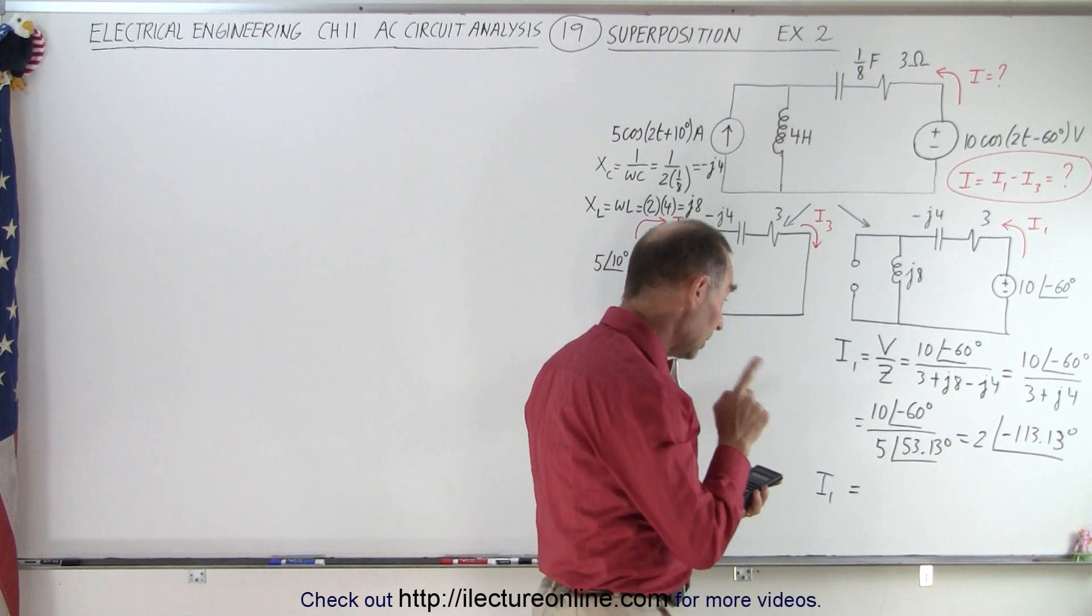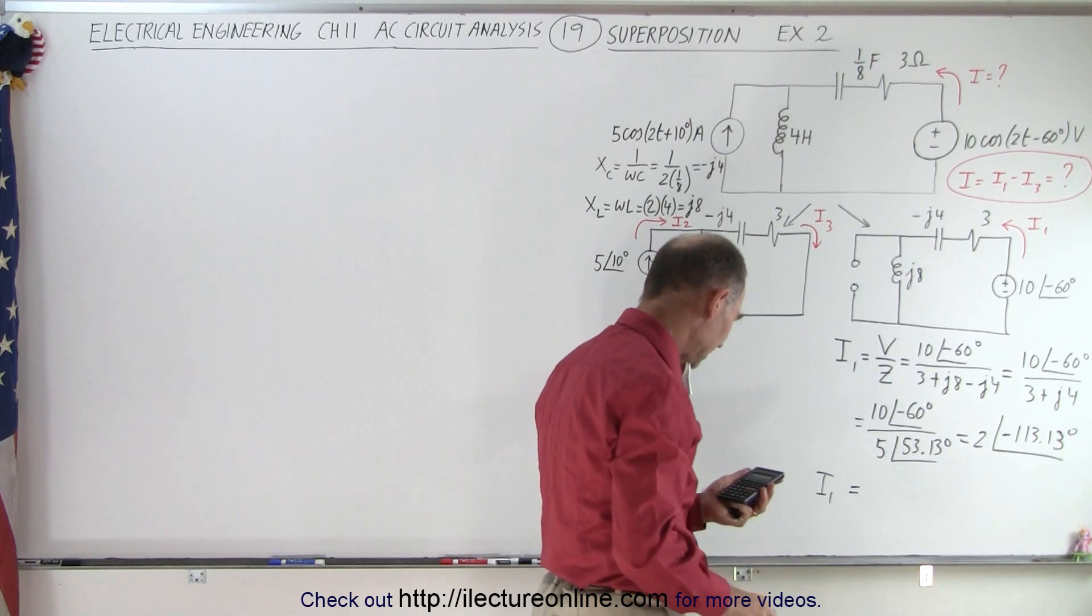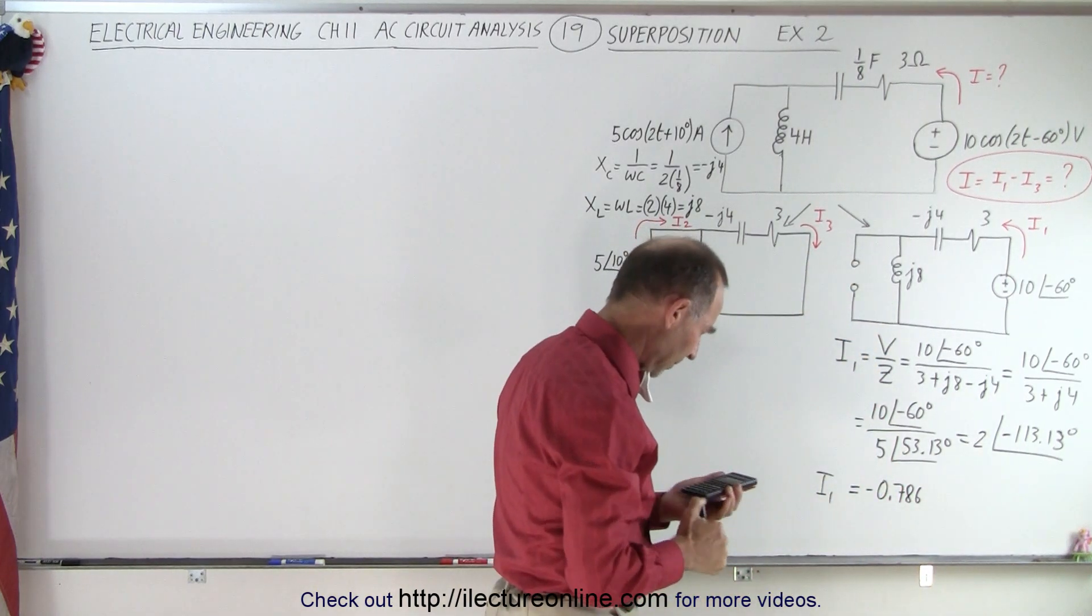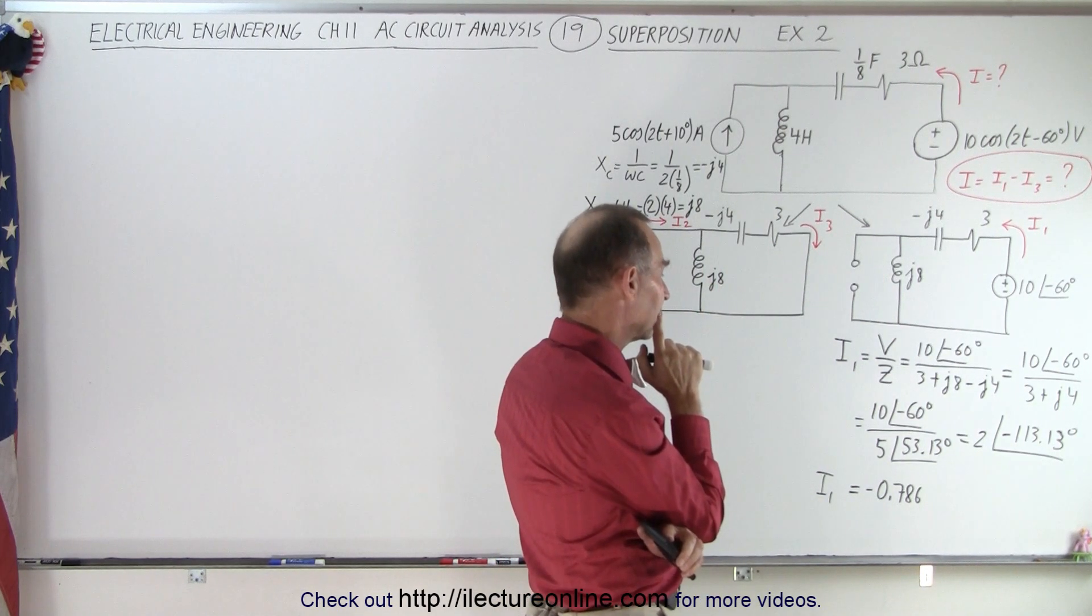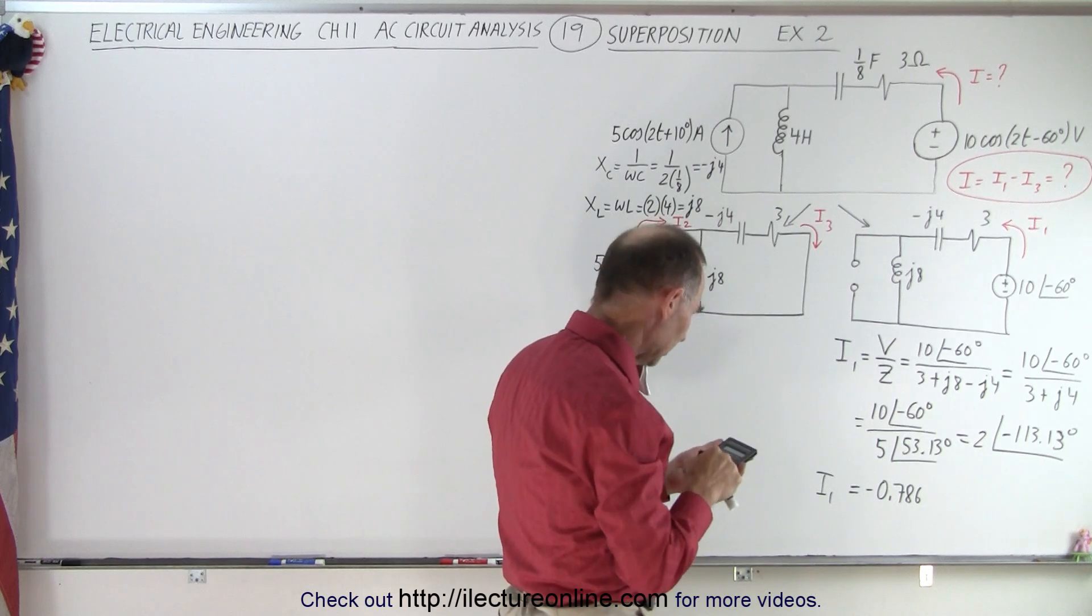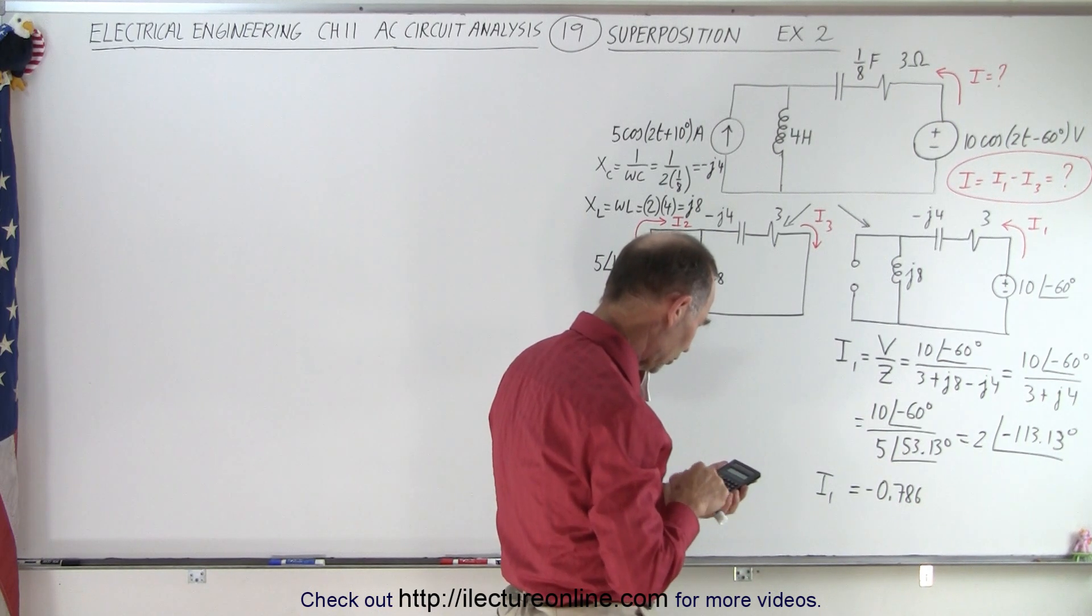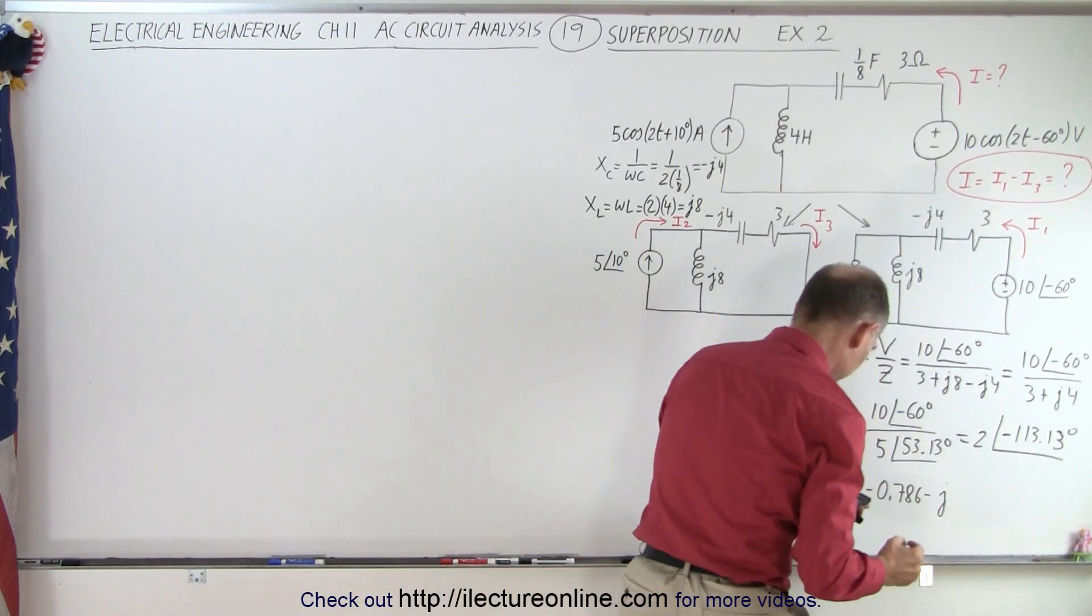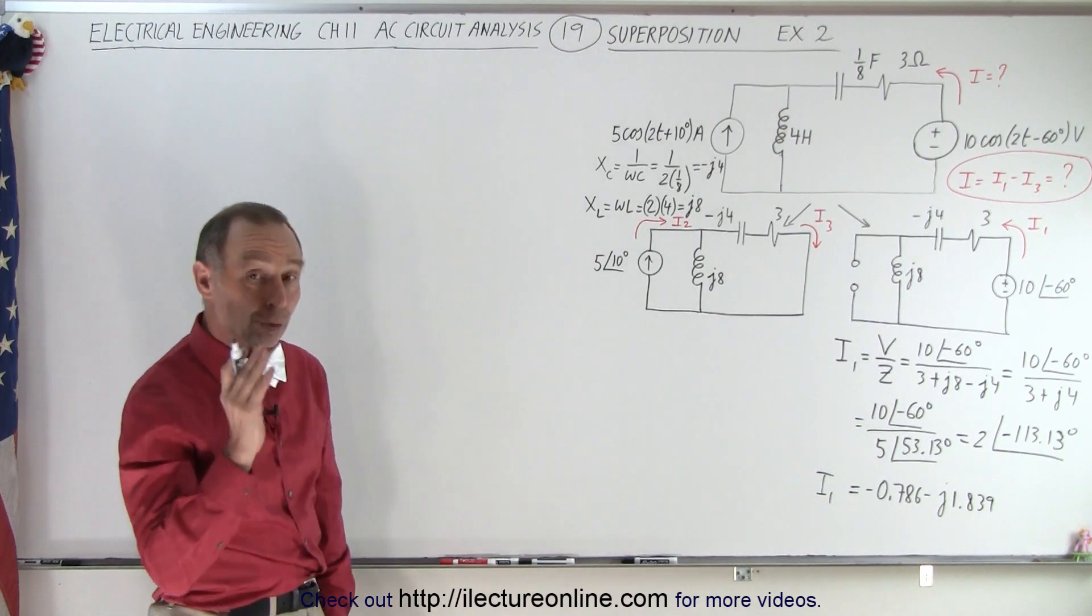We take the cosine of that, which is negative, times 2, and that gives us minus 0.786. And then we take the sine of 113.13 times 2, and that's going to be minus because it's a negative angle. So we end up with minus J 1.839. So there's our current I1.